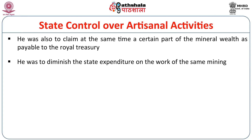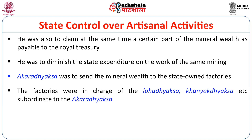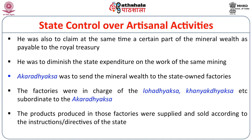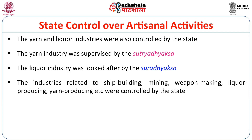Nothing could be completely private or individual — the private miner was to pay a certain amount to the state. The Akaradhyaksha was also to minimize state expenditure on mining. He was to send mineral wealth to state-owned industries or factories — Karmanta — and these factories were controlled by the Lohadhyaksha and Lavanadyaksha, subordinate to the Akaradhyaksha. The products produced in those factories were supplied and sold according to the directives of the state. Industries related to shipbuilding, mining, weapon-making, liquor, and yarn production were controlled by the Sutradhyaksha and Suradhyaksha. The state controlled less important industrial functions by imposing taxes.